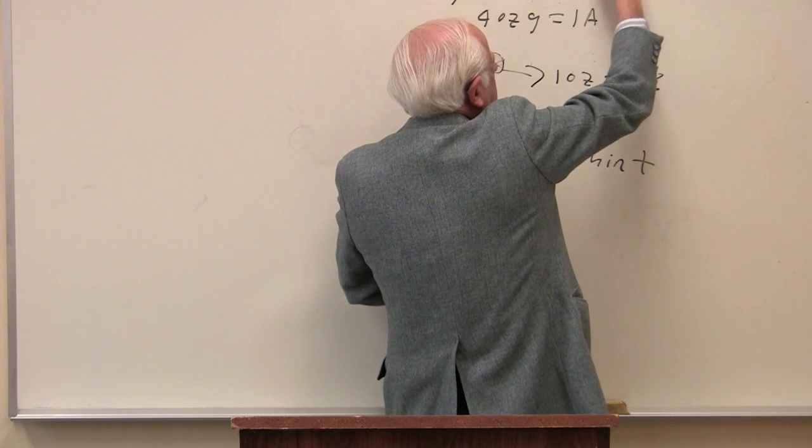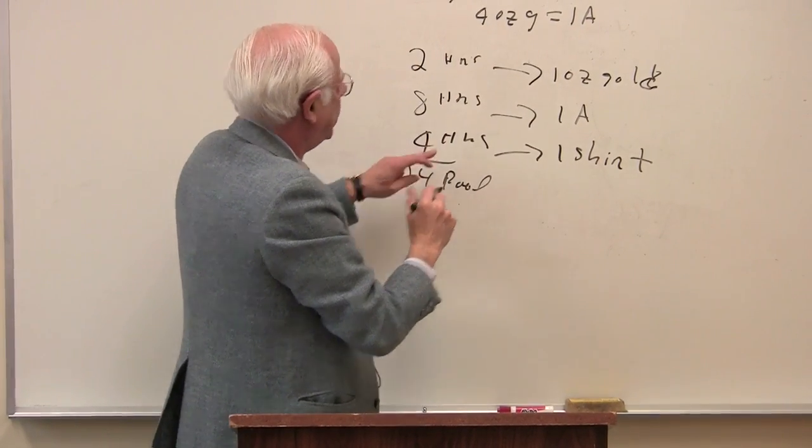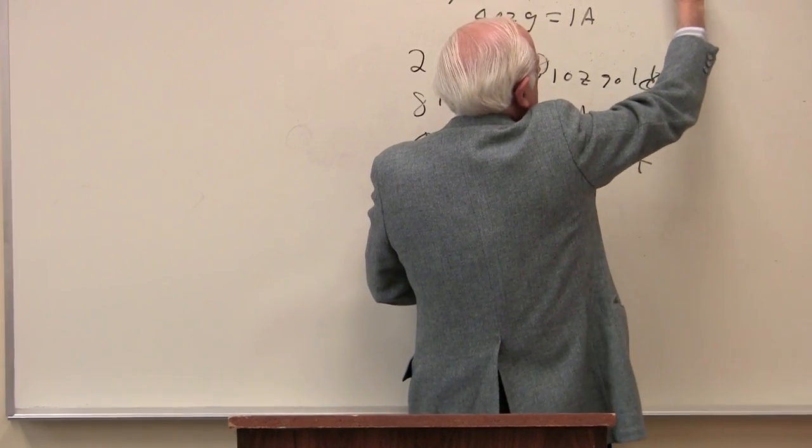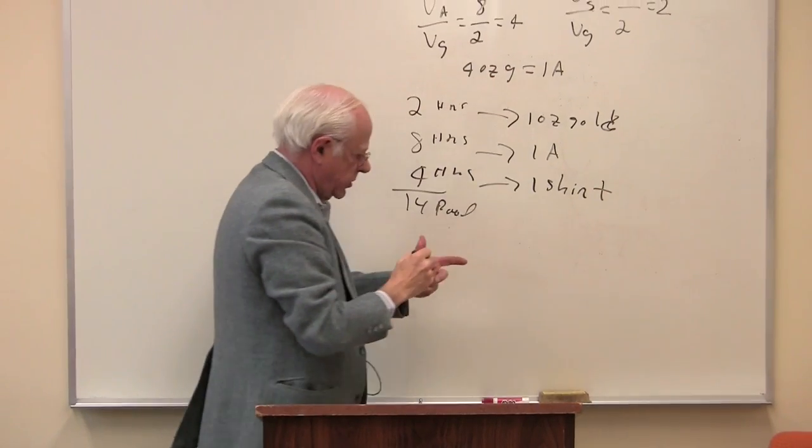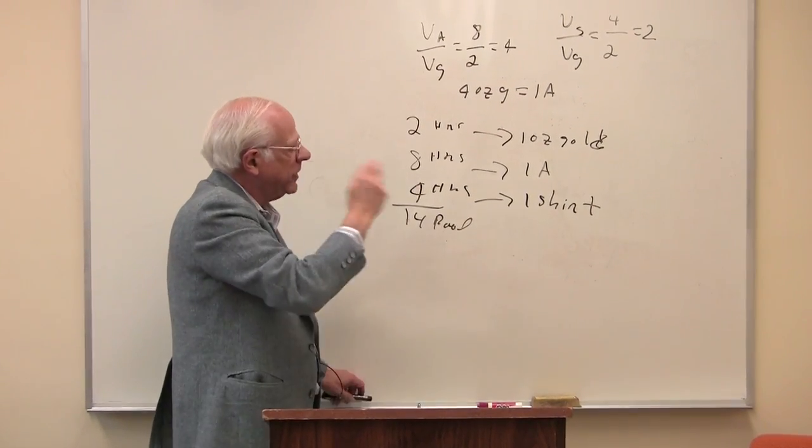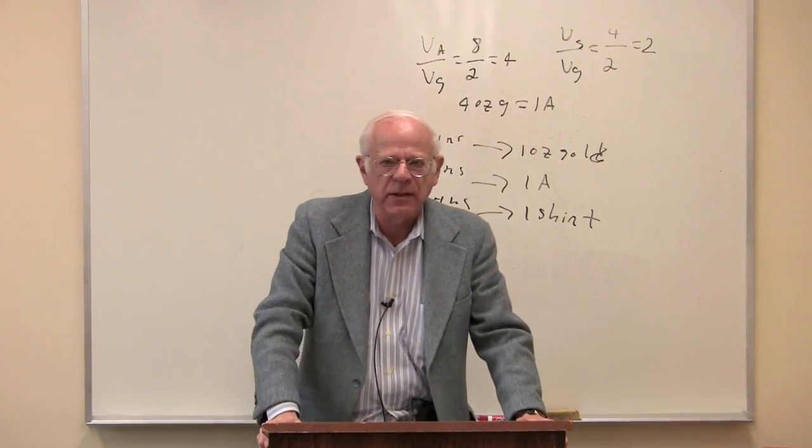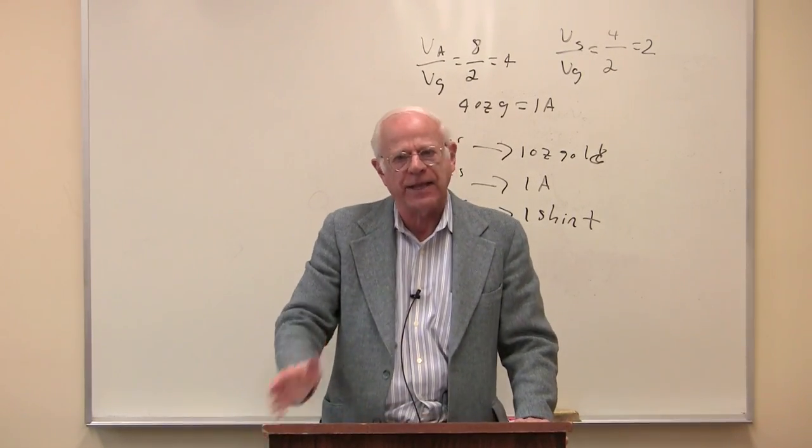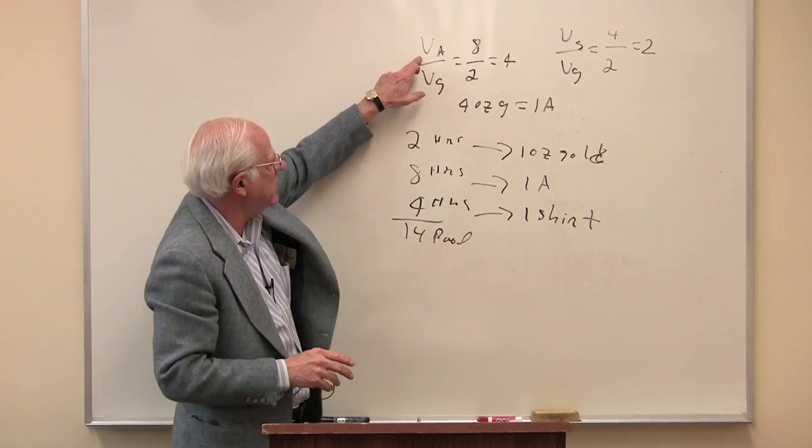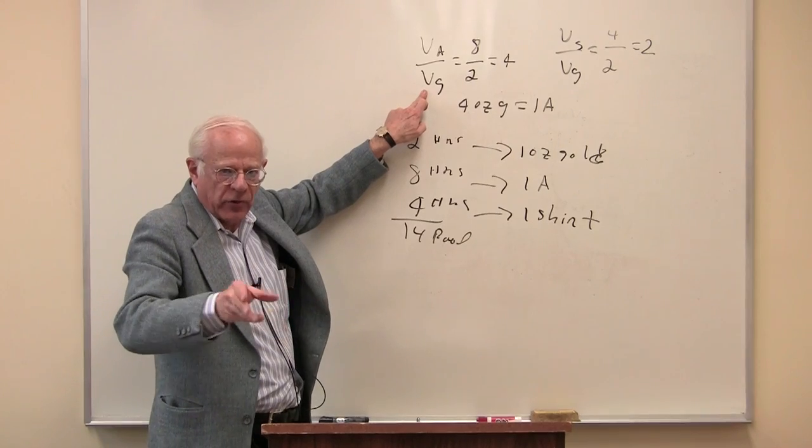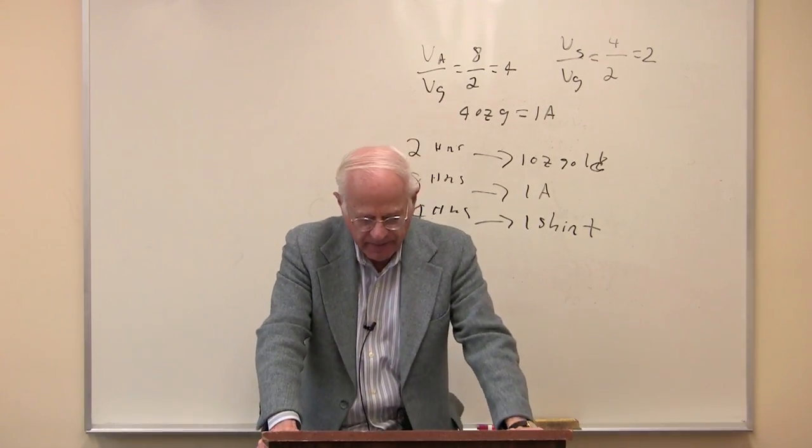Value of a shirt over the value of gold is four over two. So that's two ounces of gold equal a shirt. That's an exchange of equivalents. Notice something. Gold is always in the denominator. It's a common denominator. That's what a universal equivalent means. Every commodity can express its value in this universal equivalent.